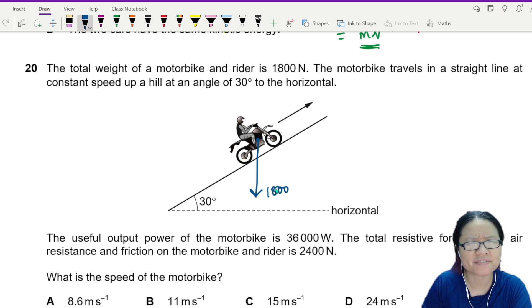The motorbike travels in a straight line at constant speed. This is important information. Constant speed tells me that the net force is zero, balanced force.